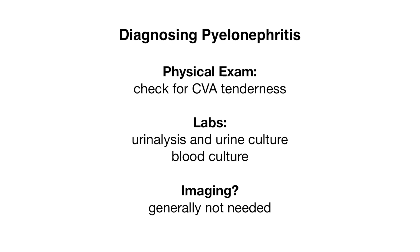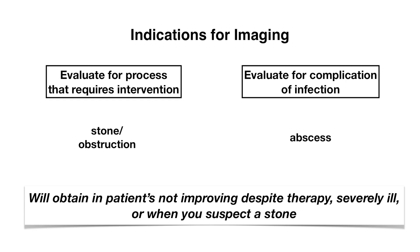Interestingly, imaging is generally not needed except in the following situations: when you're evaluating for a process that requires intervention, like a stone or another obstructive cause, or when you're evaluating for a complication of infection like an abscess, which would need to be drained. These two conditions can delay response to therapy or worsen a patient's condition. So we usually obtain imaging in patients that are not improving despite therapy, are severely ill when they first present, or where you suspect a stone — such as when you notice a significant decline in renal function or urine output.